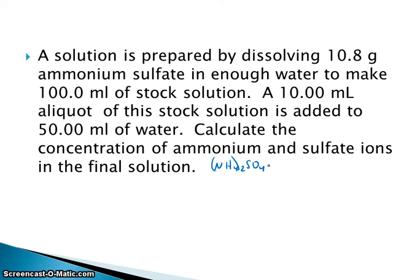We're going to add it to enough water to make 100 milliliters of a stock solution. And then we're going to take 10 milliliters of that stock solution. Aliquot just means a portion of. So 10 milliliters of this original solution and we're going to add 50 milliliters of water to it. What will the concentration of the ammonium and the sulfate ions be in the final solution? So we've actually got three parts to this problem. Our first problem we're going to calculate what the molarity of the stock solution is.